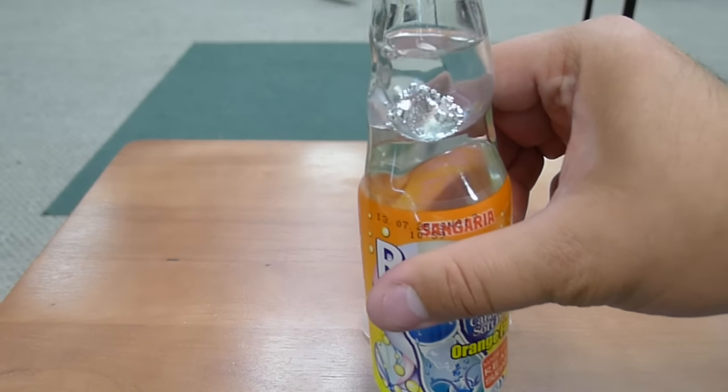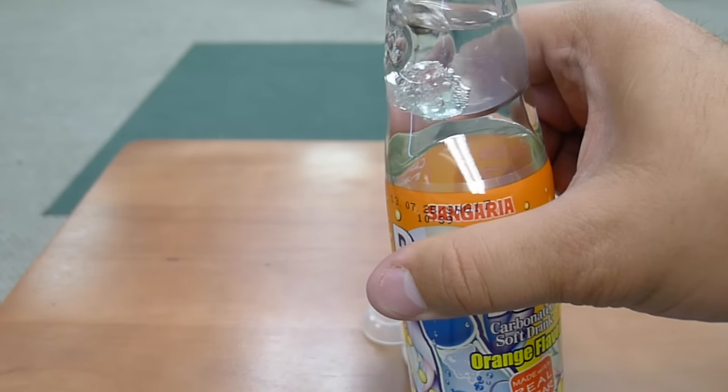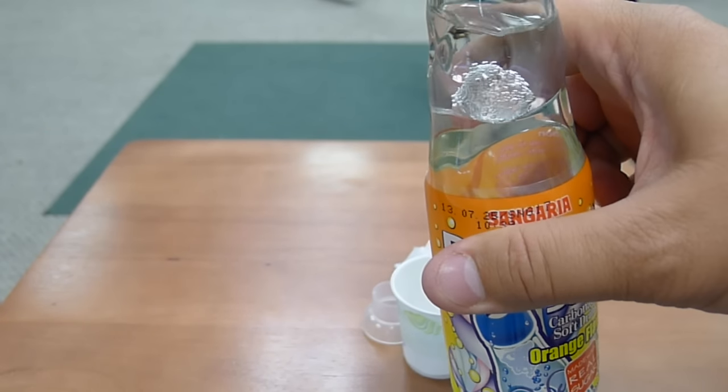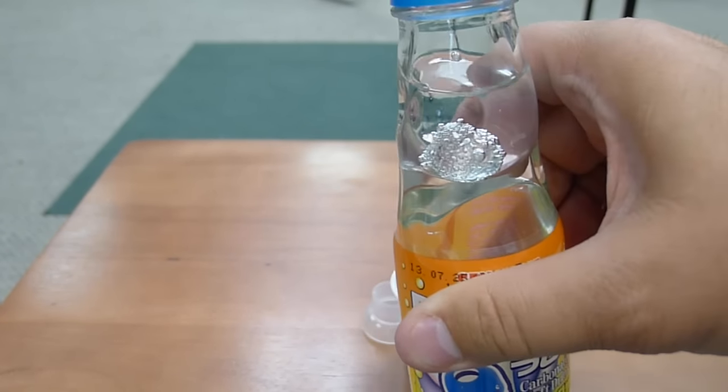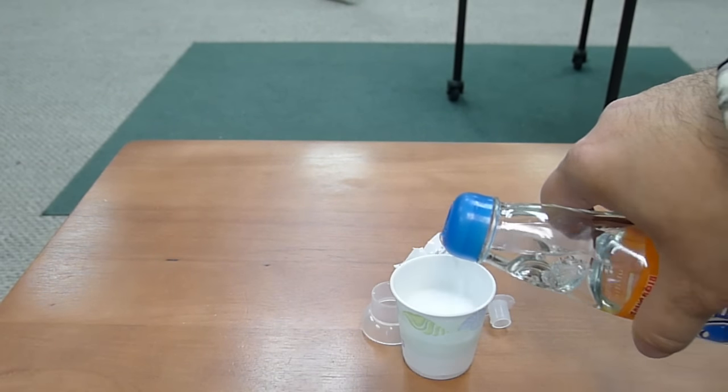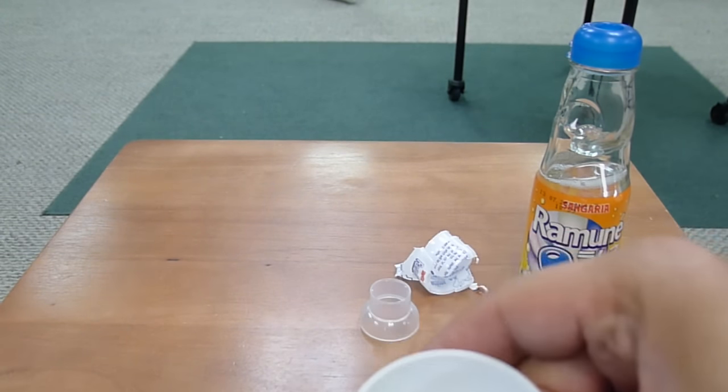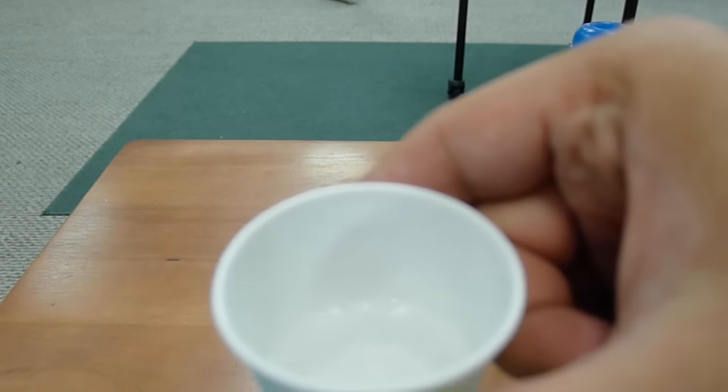Anyways, when you're pouring these, that marble, or drinking it, that marble can roll back up and get in the way. There's these little grooves on the side of the top that hold the marble in place so you can pour. And now you have delicious Ramune.